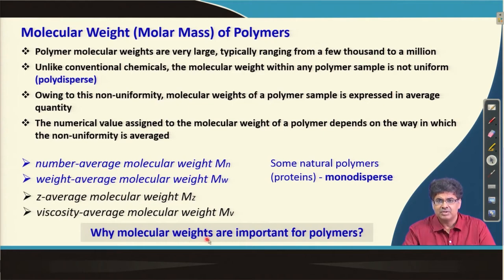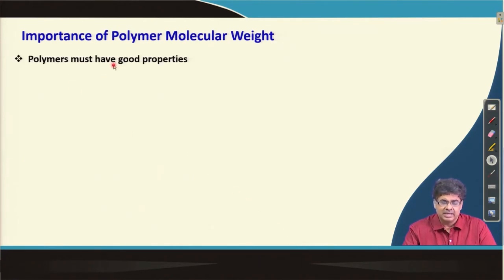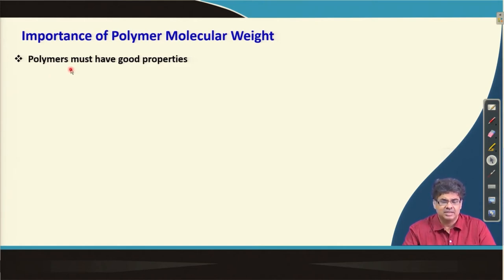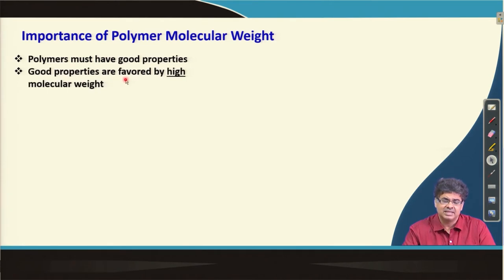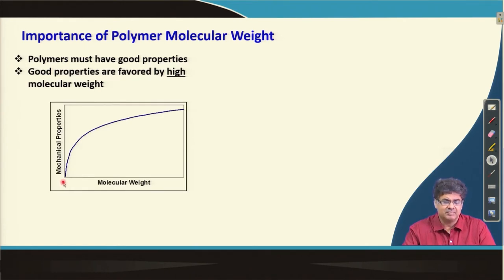What is the importance of polymer molecular weight — why should we bother about it? For any application, we always look for good properties, and there is no exception for polymer-based products. The polymer-based product must have good properties, and good properties in most cases come from high molecular weight. If you plot mechanical properties versus polymer molecular weight, you see a sharp increase in mechanical properties with molecular weight, which then levels off at high molecular weight.